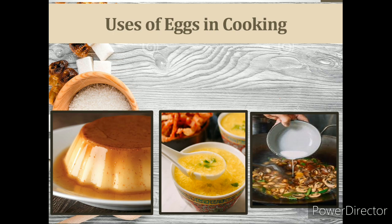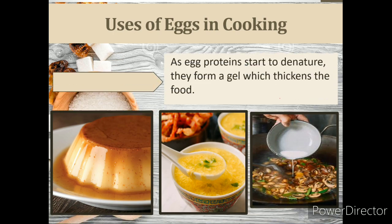The sixth use of eggs in cooking is as a thickener. A thickening agent is a substance which can increase the viscosity of a liquid without substantially changing its other properties. Edible thickeners are commonly used to thicken sauces, soups, and puddings without altering their taste. As egg proteins start to denature, they form a gel which thickens the food. Examples of eggs functioning as a thickening agent are custards and soups. The thickening effect is due to the coagulation of the proteins during heating.